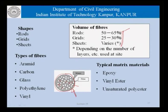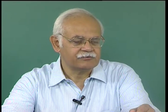That gives us a lot of flexibility in the design and construction of CFRM. For rods, the normal volume of fibers is about 50 to 60 percent; for grids it is about 25 to 30 percent; and in sheets it varies depending on the number of layers used at site. This flexibility of varying fiber volume gives us a large advantage in concrete construction.